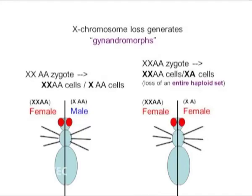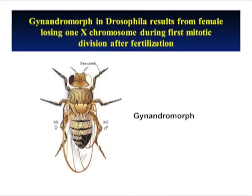Gynandomorphs are individuals which show male characters on some parts of the body and female characters on other parts of the body. They are also called gynandroids. Gynandomorphs are sterile and rare. They occur in Drosophila, butterflies, beetles, bees, and silkworms.